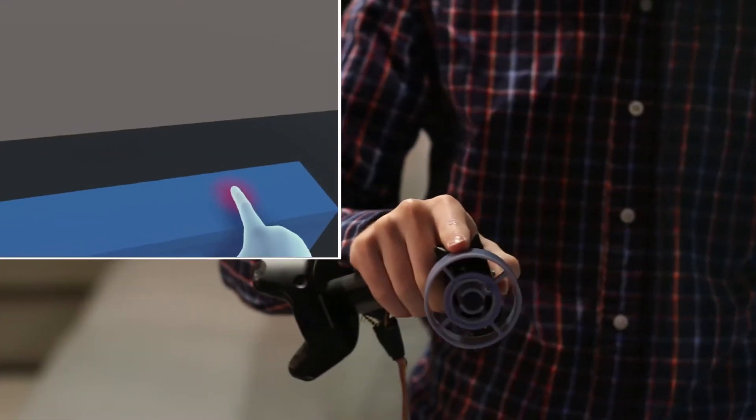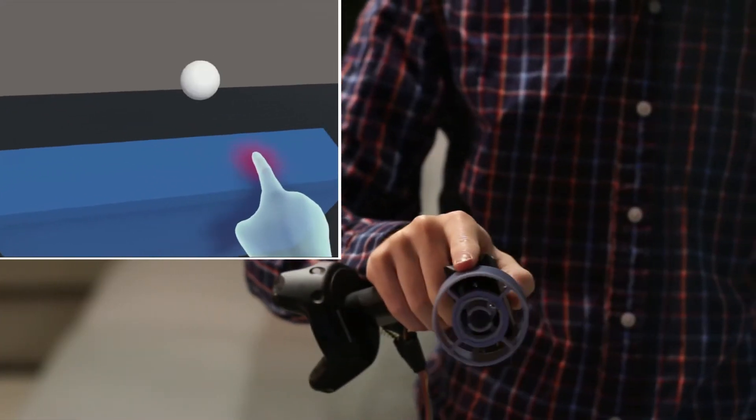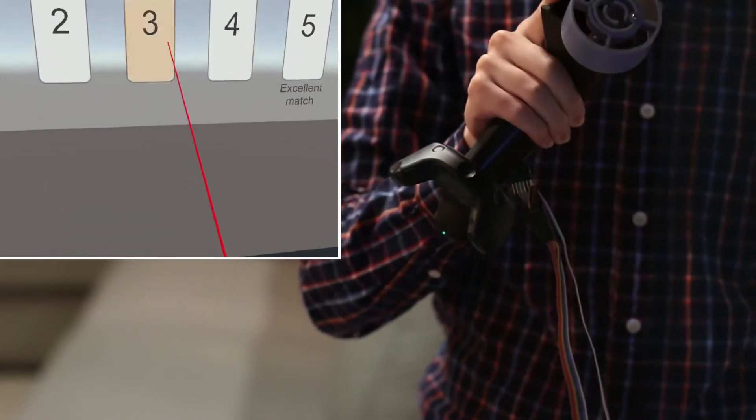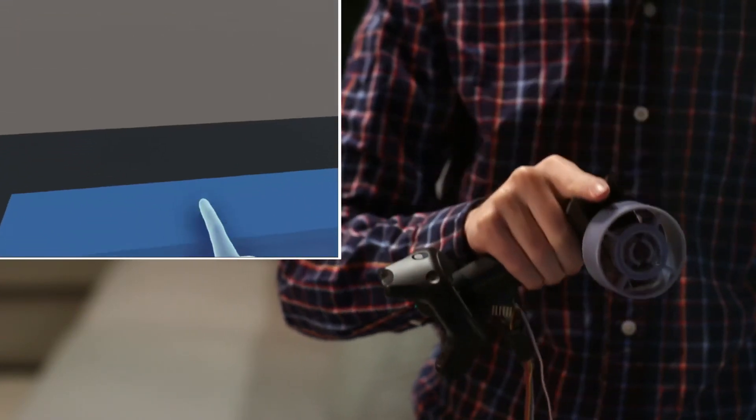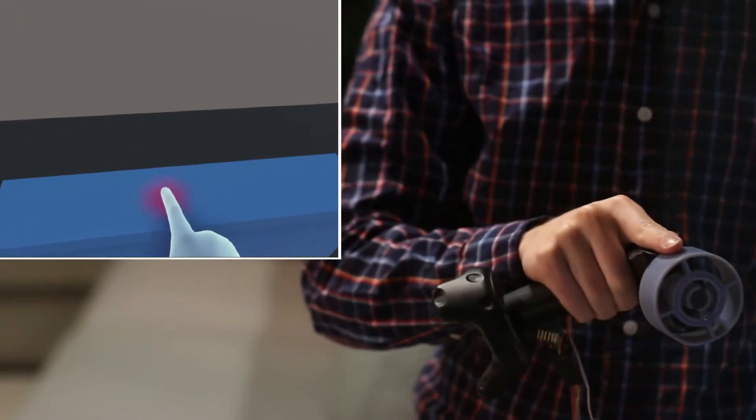Through a perceptual user evaluation, we found that we can adjust the wheel speed and direction to manipulate the size of virtual objects and even simulate motion in multiple dimensions.